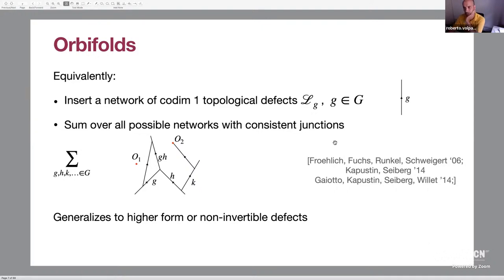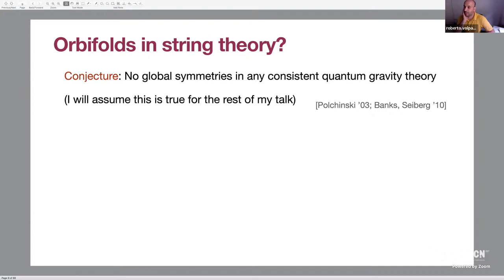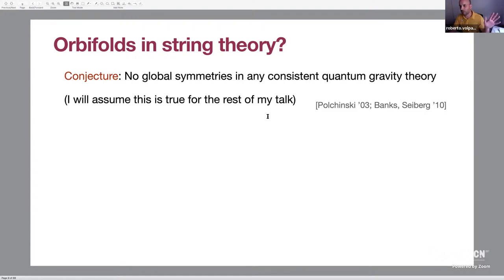What about string theory? String theory is a theory of quantum gravity, and there is a famous conjecture that in theories of quantum gravity there should be no global symmetries. There is quite some evidence in favor of this conjecture, especially for continuous gauge groups. I will just take this conjecture as true — my results will be conditional on this conjecture being true.